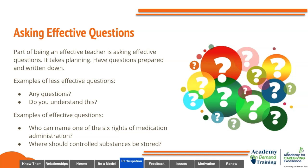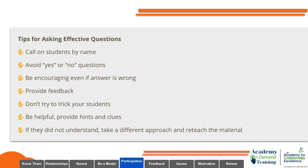Part of being an effective teacher is asking effective questions — it takes planning. Have questions prepared and written down. Examples of less effective questions are 'Any questions?' or 'Do you understand this?' — these usually get no response or just heads nodding yes. Examples of effective questions include: 'Who can name one of the six rights of medication administration?' or 'Where should controlled substances be stored?' These are open-ended questions that prompt a more thoughtful response. Tips: call on students by name, don't just wait for volunteers, avoid yes/no questions, be encouraging even if the wrong answer is given, provide feedback, don't try to trick students, be helpful and provide hints if they're stuck, and if students didn't understand, try a different approach and re-teach the material.